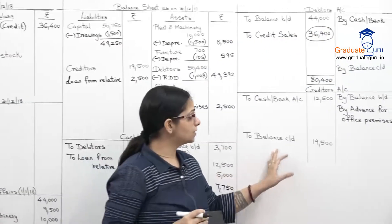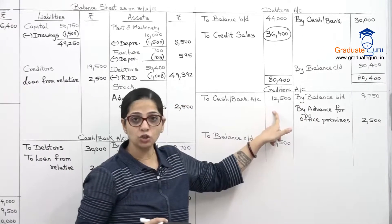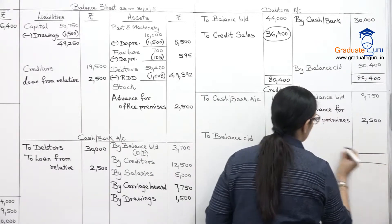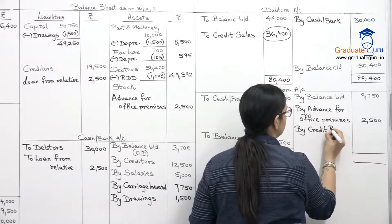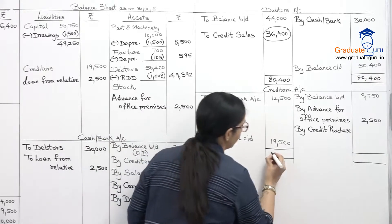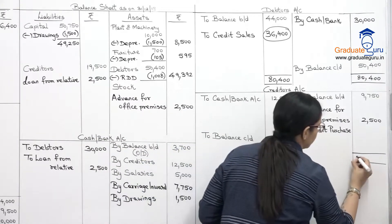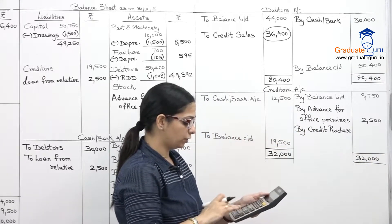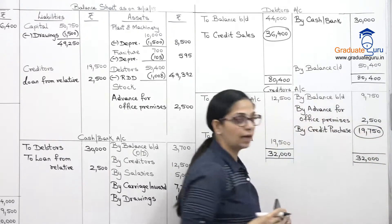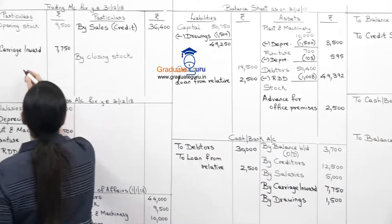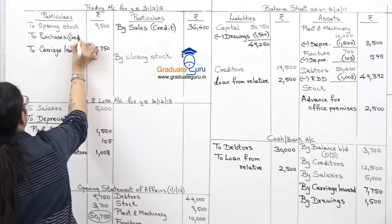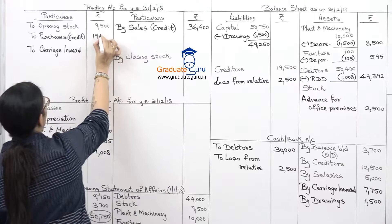Similarly, we close the creditors account. Opening, closing, and cash payment are known — what is missing is credit purchases. Credit side: 12,500 + 19,500 = 32,000. Subtract debits of 9,750 and 2,500 to get credit purchases of 19,750. Second effect goes to trading account as to purchases credit 19,750.